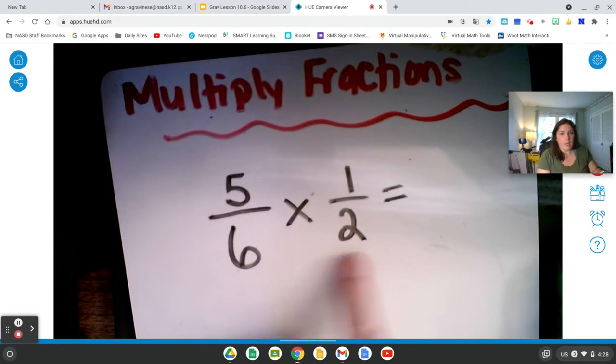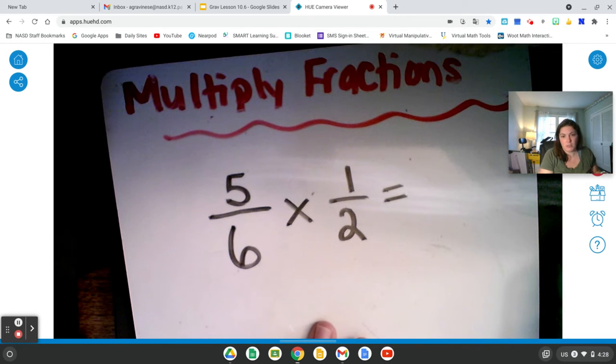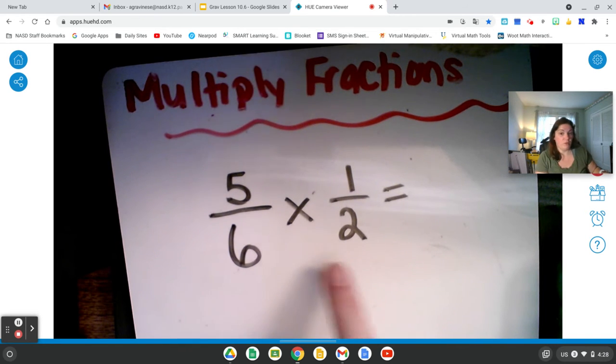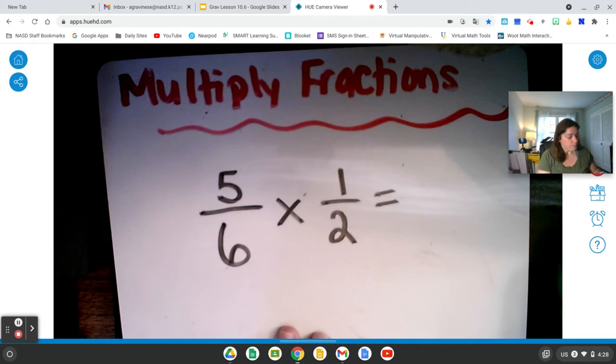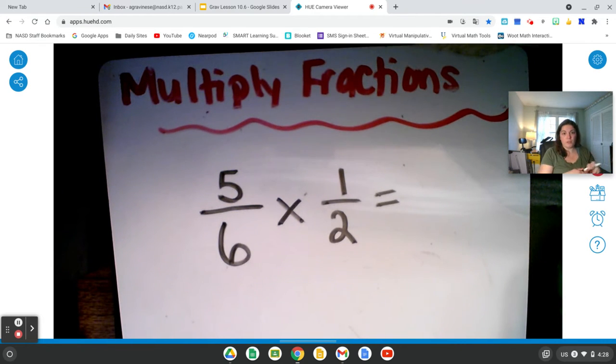So the rule is very similar to what we did last time. When we multiply fractions, we multiply the numerators and then we multiply the denominators and make sure everything's in simplest form.